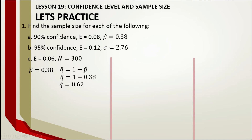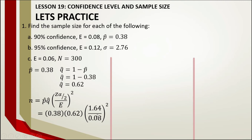The confidence level is 90%, so the confidence coefficient is 1.64. The margin of error is 0.08. Substituting into the formula, the computed sample size is 99.01. Since there is a decimal, we round up. Therefore, the final answer is 100.